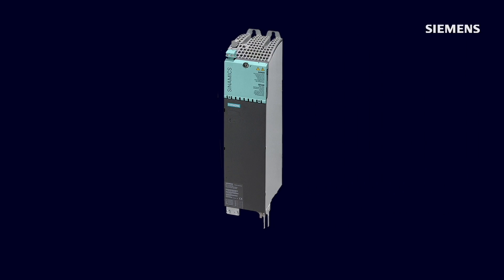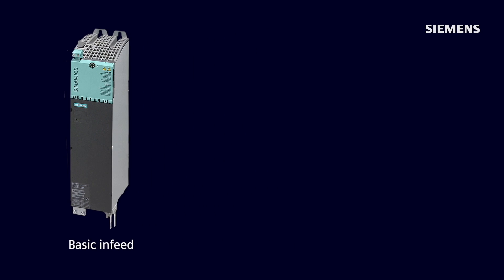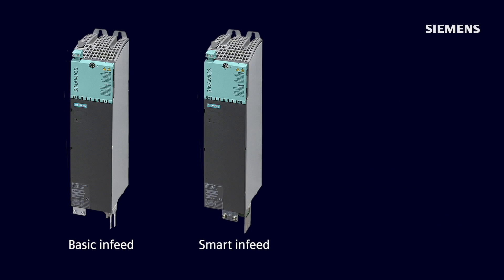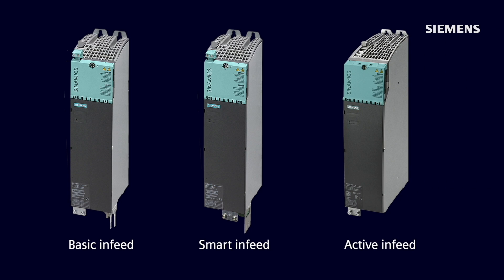Back over to the line module, which is also referred to as an infeed module, let's take a look at the three Synamics offerings. First we have the basic infeed, which is typically the most cost-optimized option. The smart infeed, which is a regenerative line module. And finally, the active infeed, which in addition to being a fully regenerative infeed module, also provides a number of additional features, which we're going to discuss in more detail shortly.